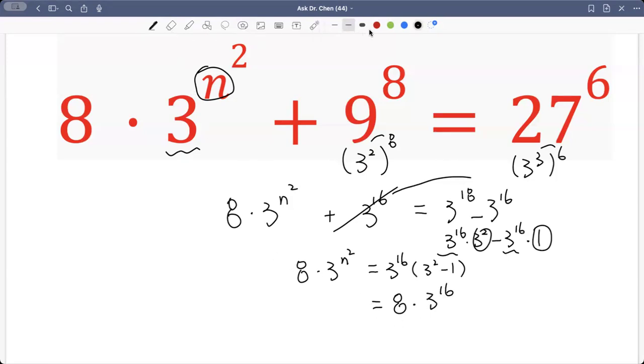All right, compare two sides. So we divide by 8 on both sides. So we divide by 8, this becomes 1, this becomes 1. So we have 3 raised by n squared equals to 3 raised by 16.